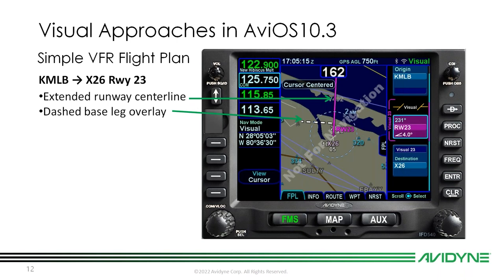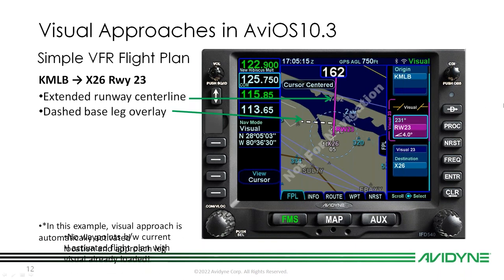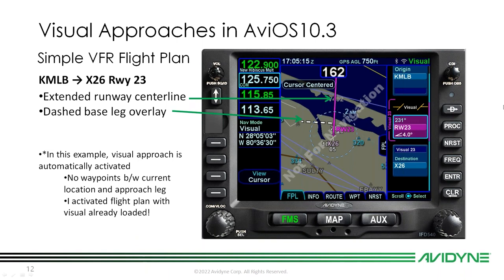After selecting right base, you'll see the extended runway centerline and a dashed base leg overlay. If you followed along without activating the flight plan separately, you'll notice the visual approach is automatically activated. This is because there are no waypoints between your current location on the ground at Melbourne and the approach leg — it goes straight to X26. Since you activated the flight plan with the visual already loaded, you will not see the 'Activate Visual' FMS hook appear.